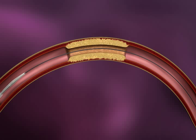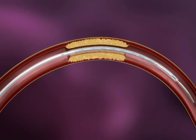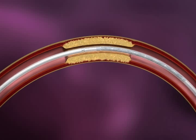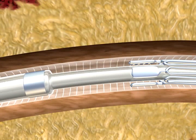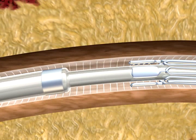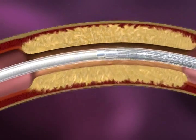Advance the Wingspan Stent System over the exchange length guide wire. Continue to advance the delivery system over the guide wire until the stent is slightly distal to the target lesion. Observe the proximal and distal marker bands indicating stent position. Advance the inner body of the delivery system until the proximal marker band bumper is just proximal to the stent. This prepares the stent for deployment.